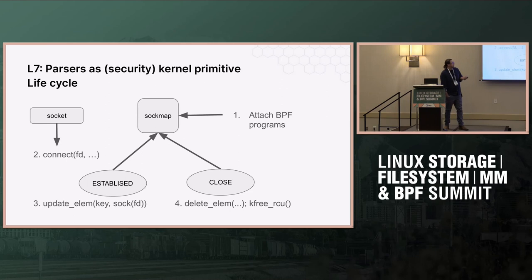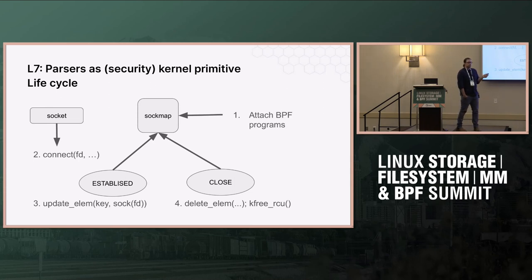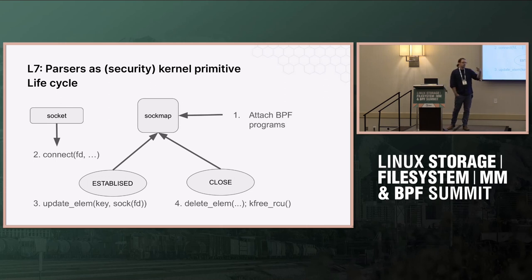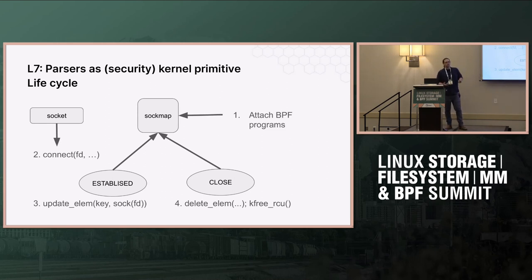Why you have to do that is interesting — we had multiple proposals on how to make this work. One idea was to use Uprobes: put Uprobes in the user stack on the libraries. The main problems are: we're a security tool, and as soon as you start hooking Uprobes, you're reading user memory, which means the user owns the memory. There's no guarantee that a malicious user isn't going to change the memory after you read it, or just avoid your hook altogether. You hooked OpenSSL — the user just decided not to use OpenSSL.